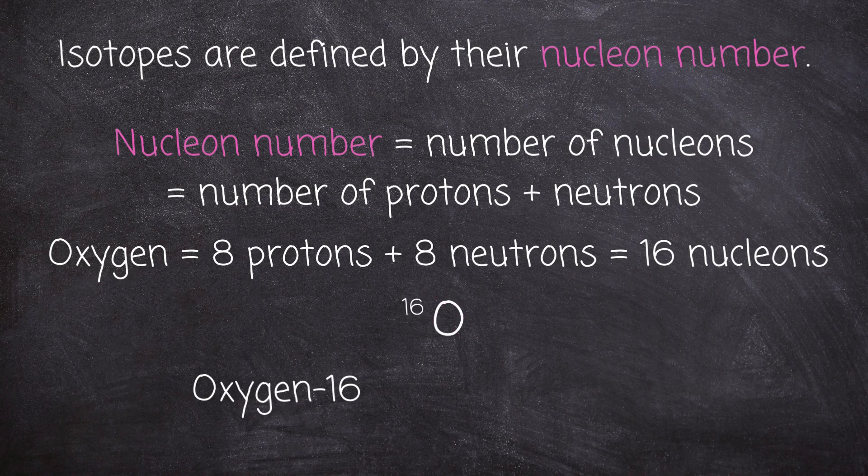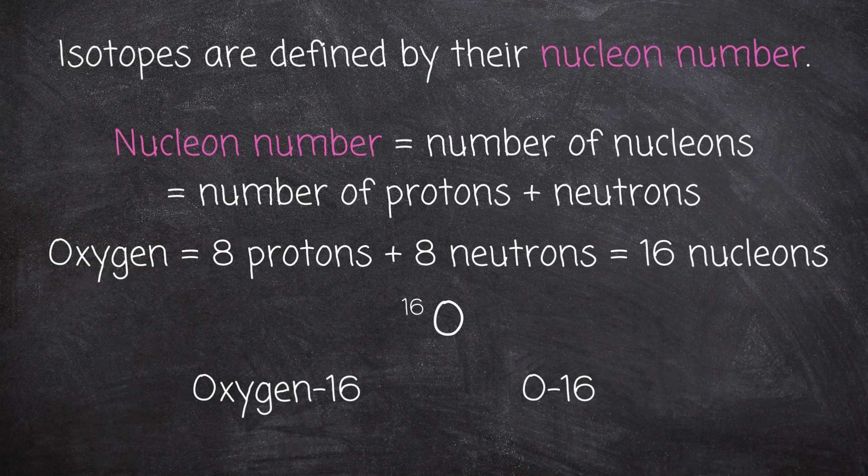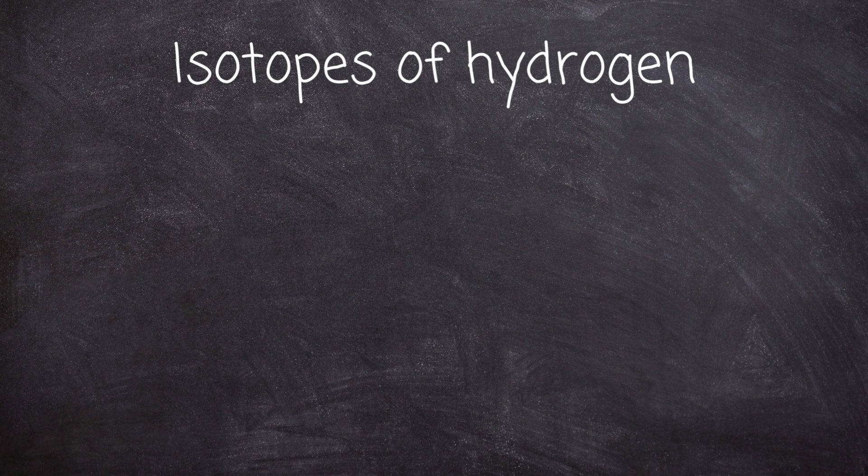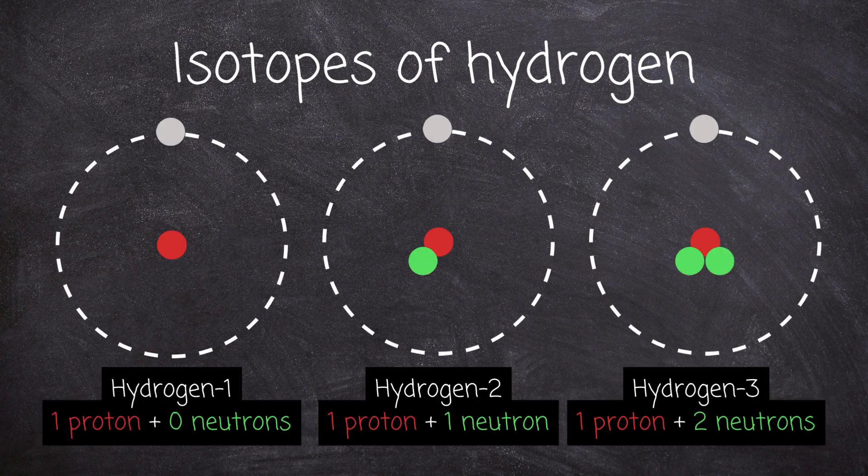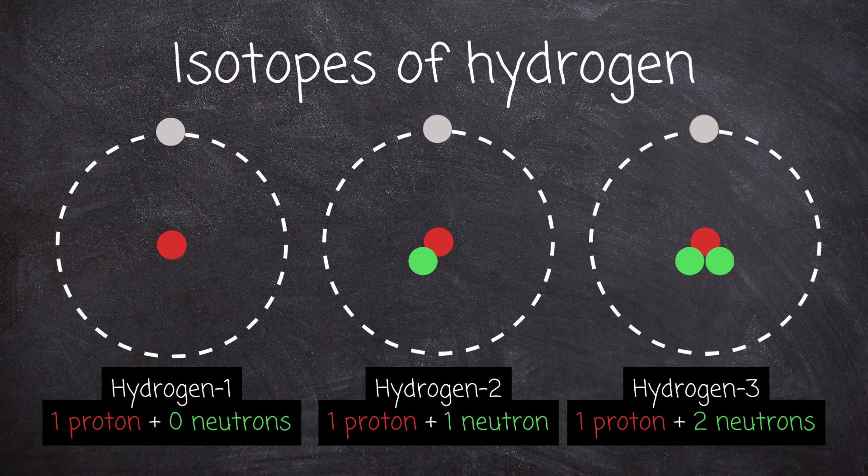Now let's look at some examples of isotopes. The isotopes of hydrogen all have one proton but different numbers of neutrons. Hydrogen-1 has only one nucleon, which is its proton. Hydrogen-1 has no neutrons.